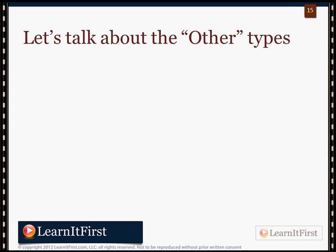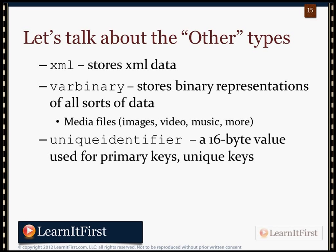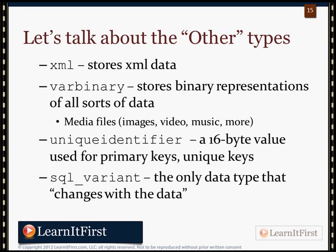A quick rundown of other data types: the XML data type allows us to store XML data with indexing and efficient document shredding. The VARBINARY data type stores binary representations of data — you can store files in the database, though a file table may be more efficient. The UNIQUEIDENTIFIER is a globally unique ID, or GUID — those things that look like software serial numbers, such as '1436-PQ7Z-...' and so on.